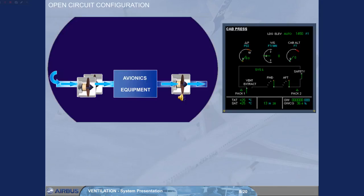On the ground, with engines not running, air blown through the avionics equipment is discharged overboard via an overboard extract valve.